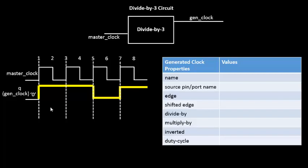One thing to observe here is that the duty cycle is not 50%. The duty cycle is defined by how long the clock remains at the high level versus the low level. In this case, the duty cycle is approximately 33% and 66%: the clock is at the high level for 66.66% of the period and at the low level for the remaining 33.33%.